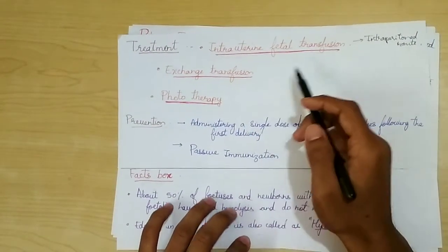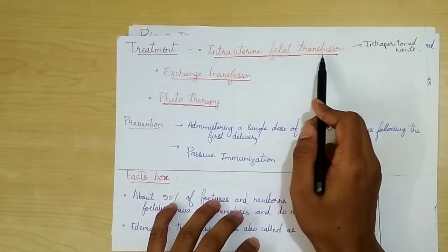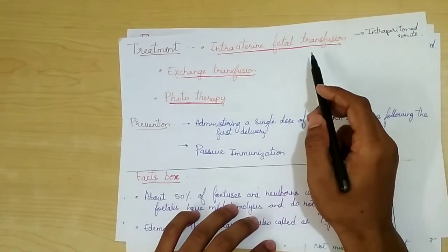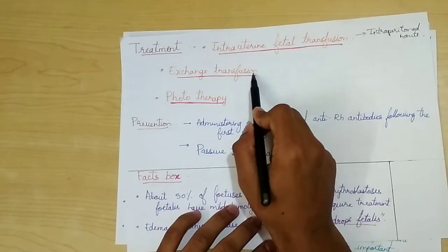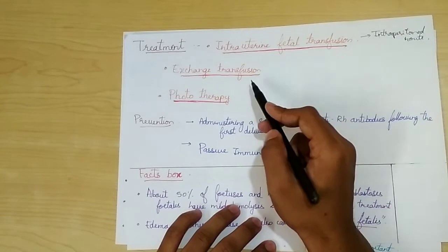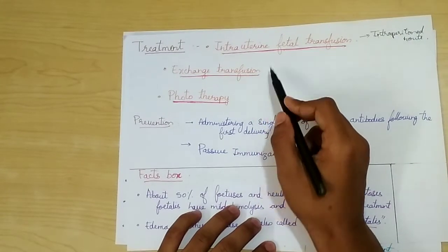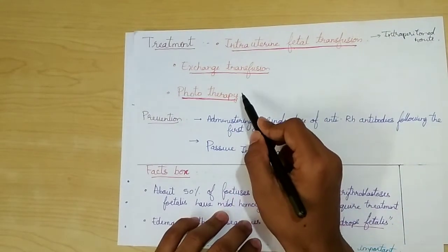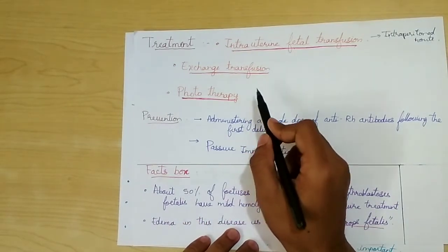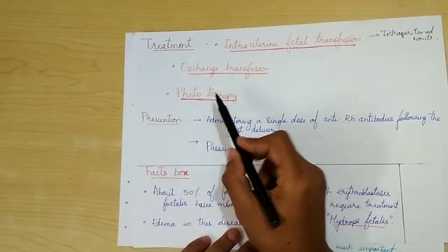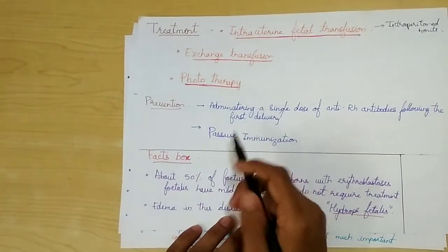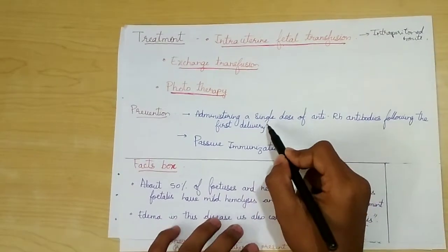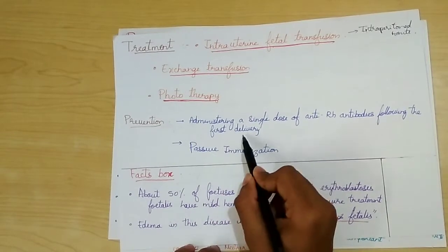Treatment of erythroblastosis fetalis: intrauterine fetal transfusion is done via the intraperitoneal route in major cases such as severe hemolysis and jaundice. Exchange transfusion involves replacing the full blood, removing sensitized red blood cells, antibodies against red cells, and other harmful products from the fetal blood. Phototherapy involves photo-oxidizing the excess bilirubin to make it non-toxic using light. Prevention: administering a single dose of anti-RH antibodies following the first delivery is a must for an RH negative mother who delivers an RH positive child — this can also be done as passive immunization.